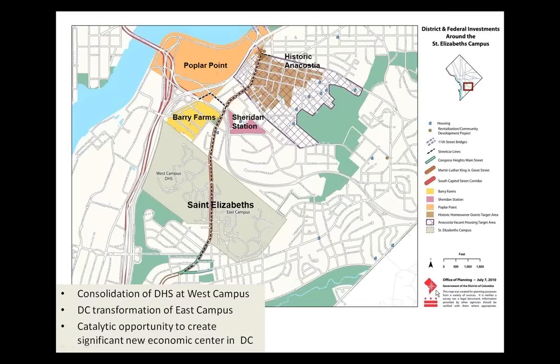The area we're looking at: the Department of Homeland Security is currently spread across the region in about 40 different locations and is going to be consolidating down to about 10 or 12 locations, with its headquarters right here in this red box — the Congress Heights neighborhood in Ward 8. Specifically, DHS is going to have its headquarters on the west campus of the St. Elizabeth's site, the former mental hospital. This area east of the river, Ward 8 and Ward 7, has been historically disinvested in and has some of the highest rates of unemployment, poverty, and illiteracy not just in the city but in the region.